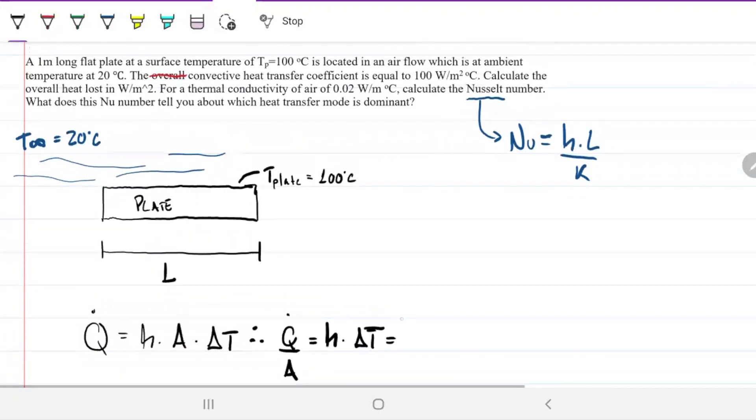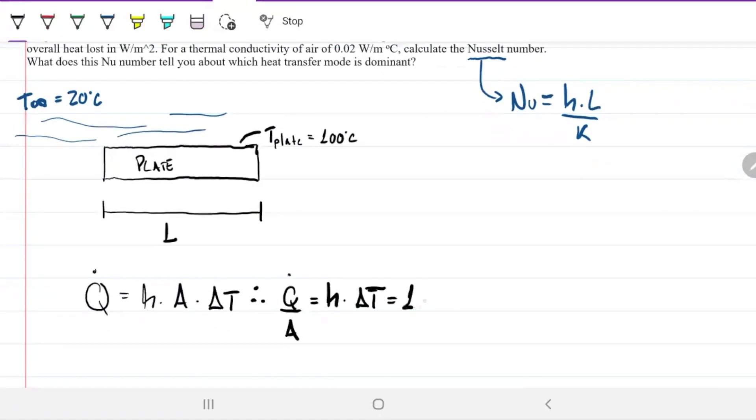Okay, we have a coefficient of 100, and we're going to have 100 minus 20. So that will be 8,000 watts per meter squared.